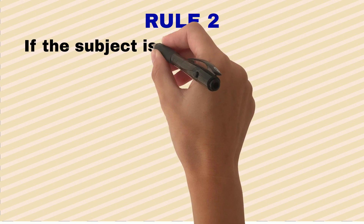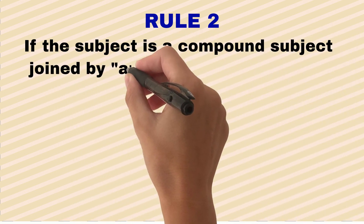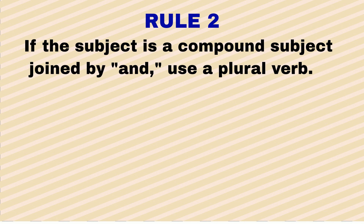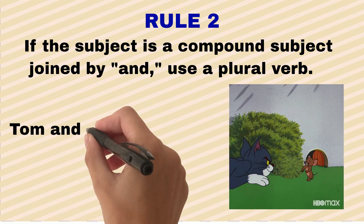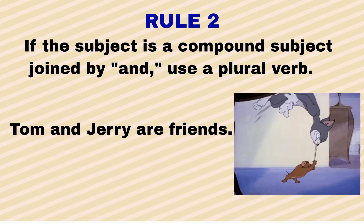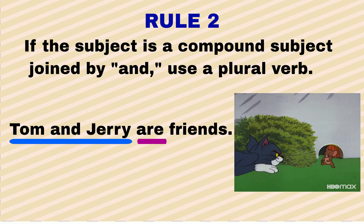If the subject is a compound subject joined by 'and,' use a plural verb. To learn about compound subjects, open the link above. For example, 'Tom and Jerry are friends.' Here, 'Tom and Jerry' is a compound subject, and 'are' is a plural verb.